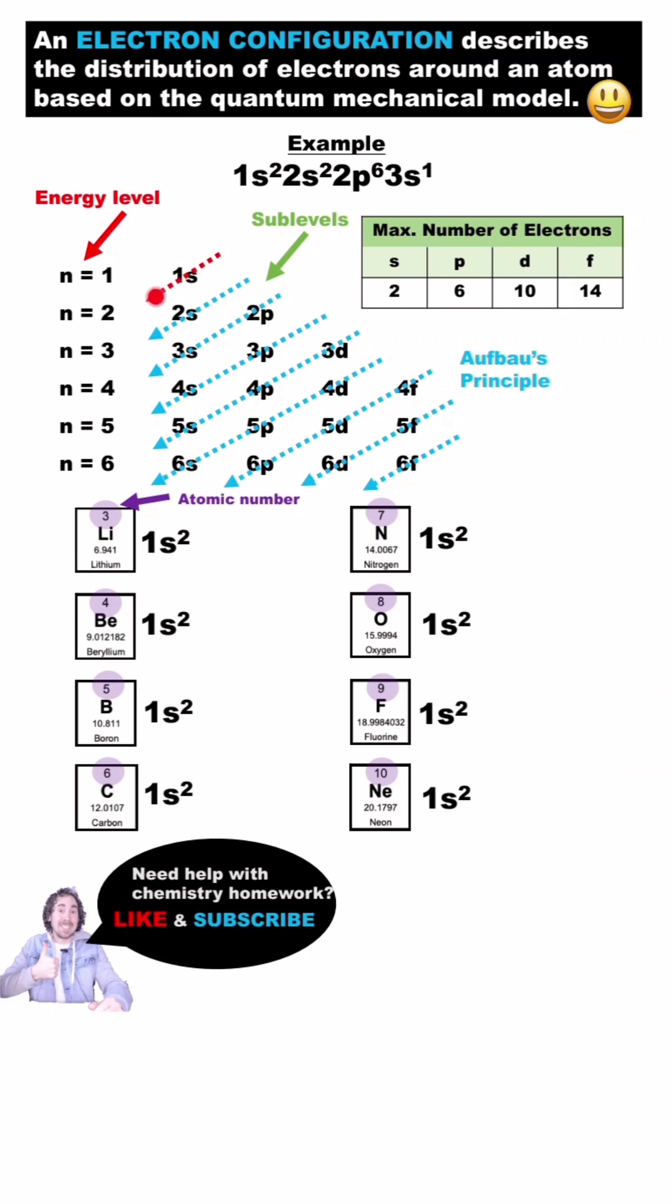For each of these elements, we'll start at the lowest energy sublevel, the 1S. An S sublevel can hold a maximum of 2 electrons, so I will start with 1S2 for each.